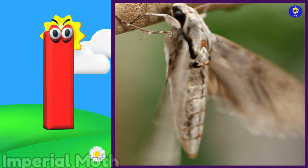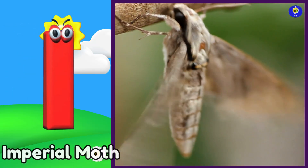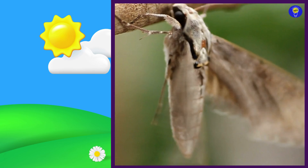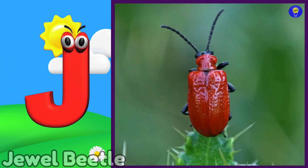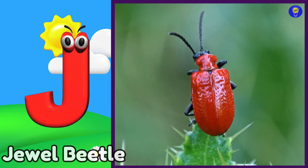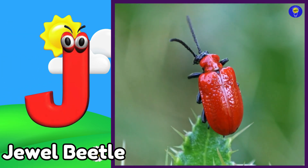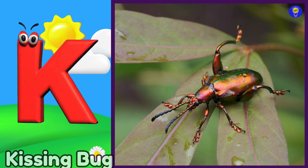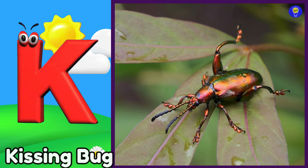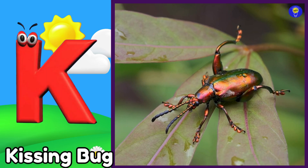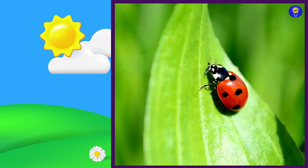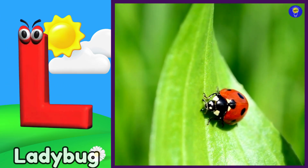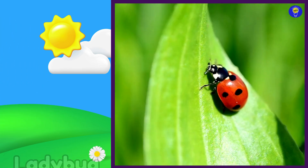I is for imperial moth. I, i, imperial moth. J is for jewel beetle. J, j, jewel beetle. K is for kissing bug. K, k, kissing bug. L is for ladybug. L, l, ladybug.